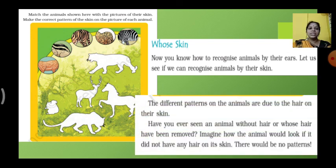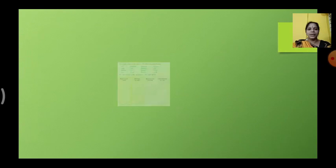Next, the different patterns on the animals are due to the hair on their skin. So why they are different means due to their hairs. Have you ever seen an animal without hair or whose hair have been removed? Imagine how the animals could look if it does not have any hairs on its skin. That would be no patterns. So if no hairs will be there in the skin means it will look very odd. It will not look nice. With that pattern they look nice.